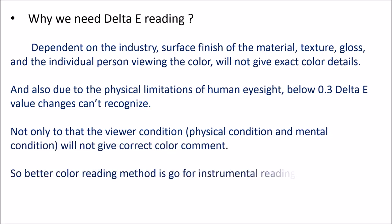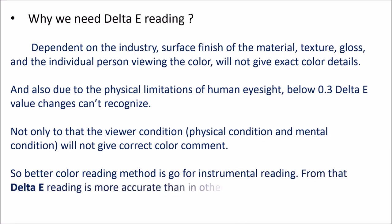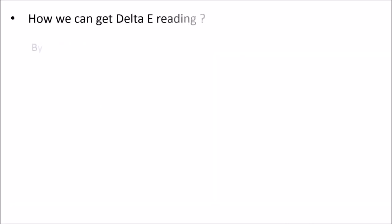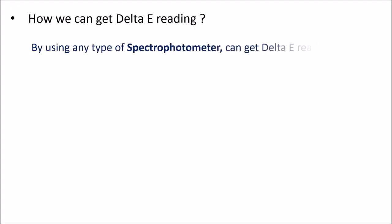Delta E reading is more accurate than other non-uniform systems such as RGB or CMYK. By using any type of spectrophotometer, anyone can get a delta E reading against a standard color.